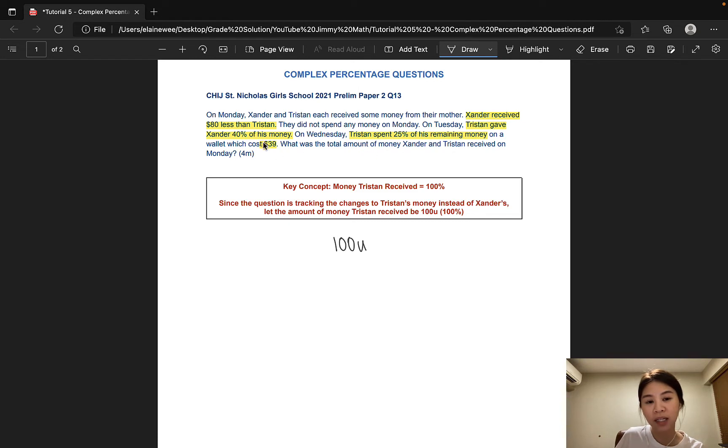So 40% is 40 units. That would mean that his remainder is 60 units.